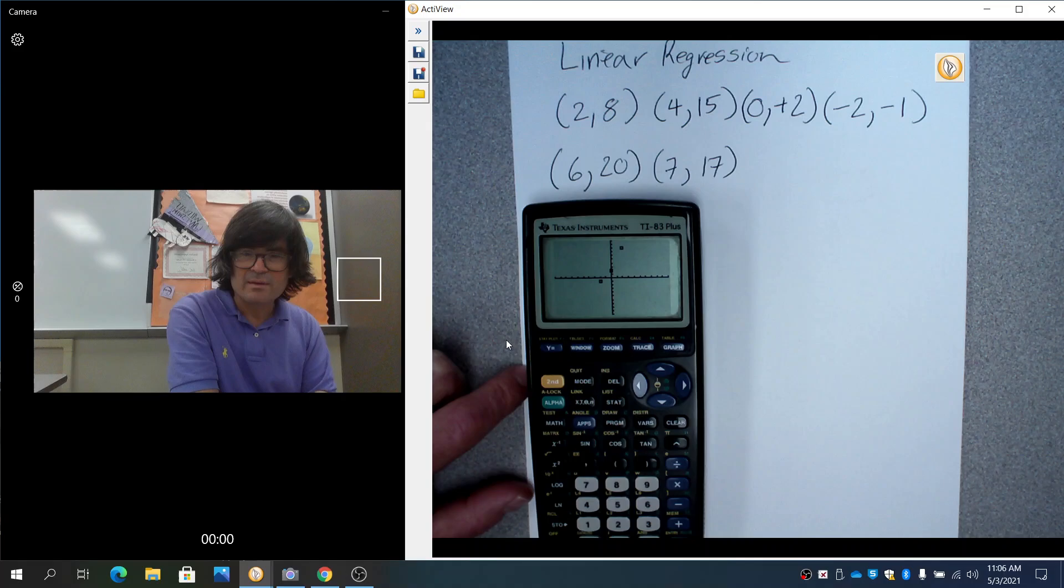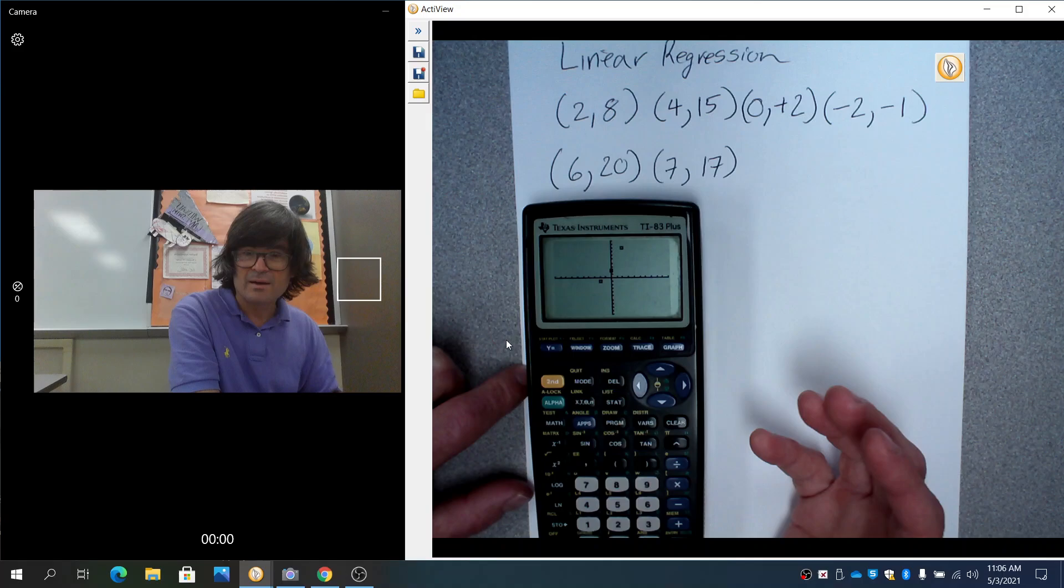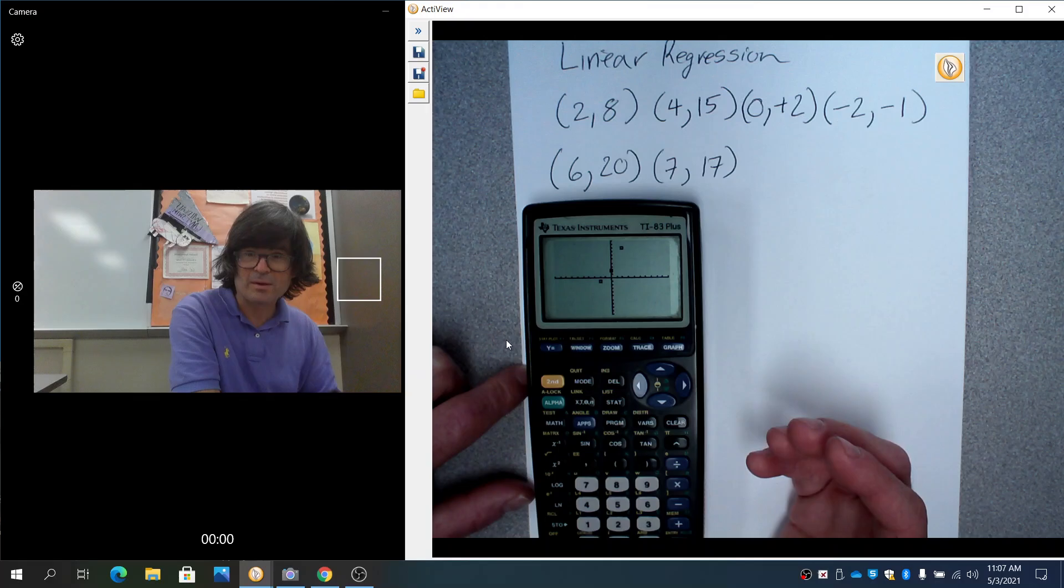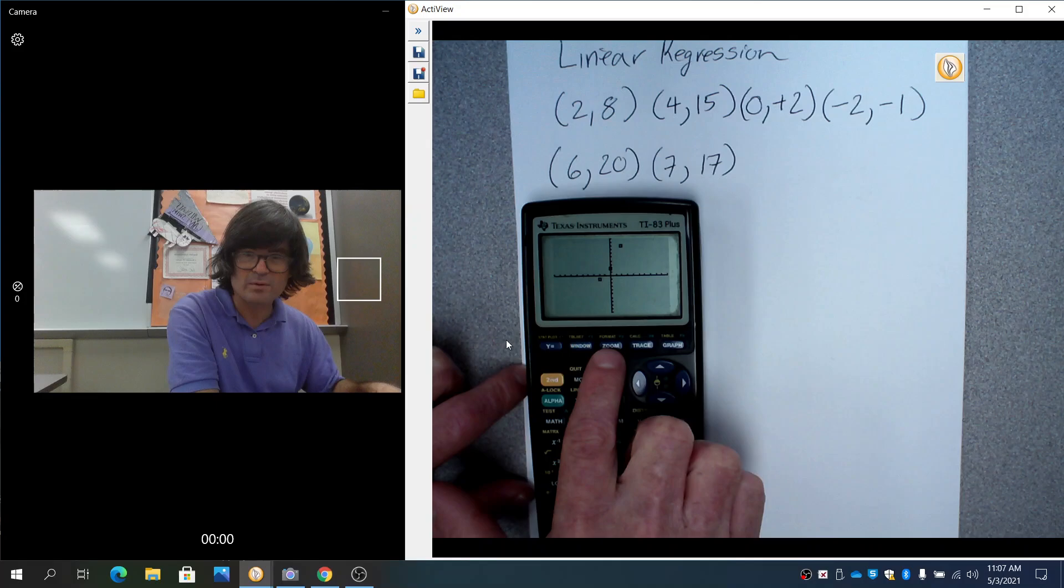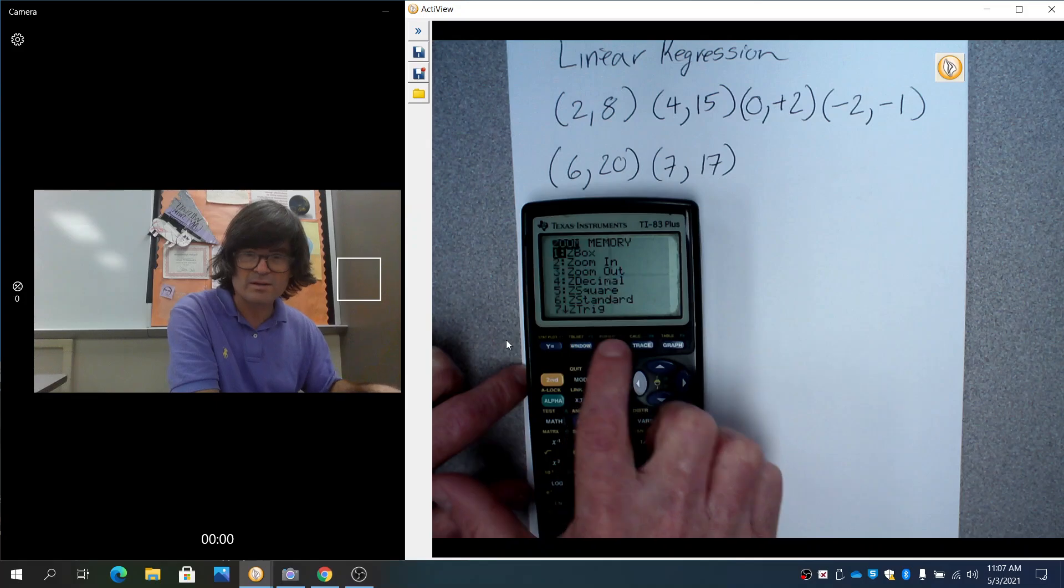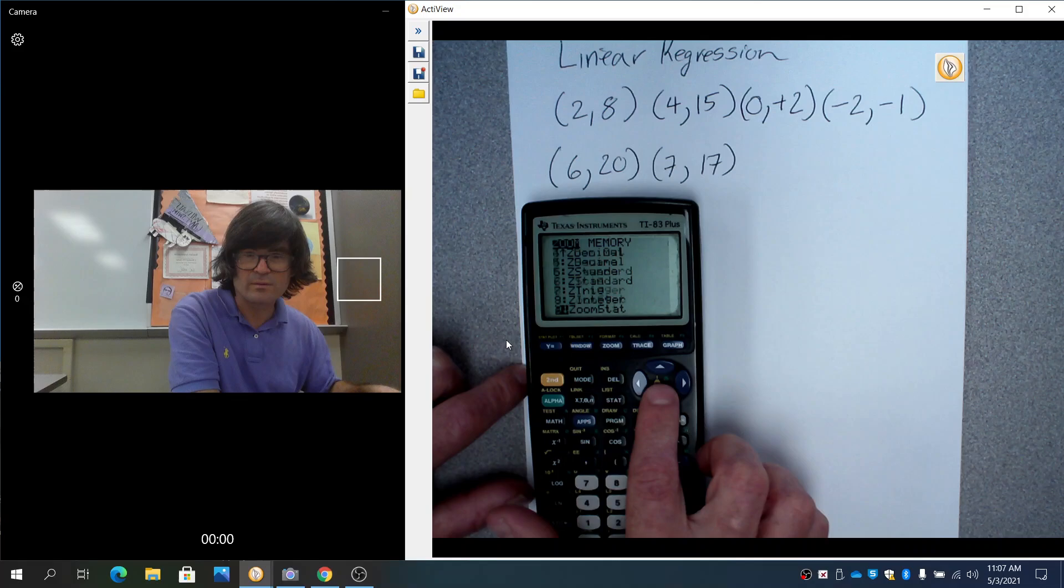And I'm just going to hit GRAPH and I see my points. I see three of them, I don't see the others, so this is a problem. You need to make the calculator find all the points and show you the appropriate window. Right now I've got 10 right, 10 up, 10 left, 10 down. So if you go to ZOOM right here, hit ZOOM and go down to ZOOM STAT all the way down, option 9.